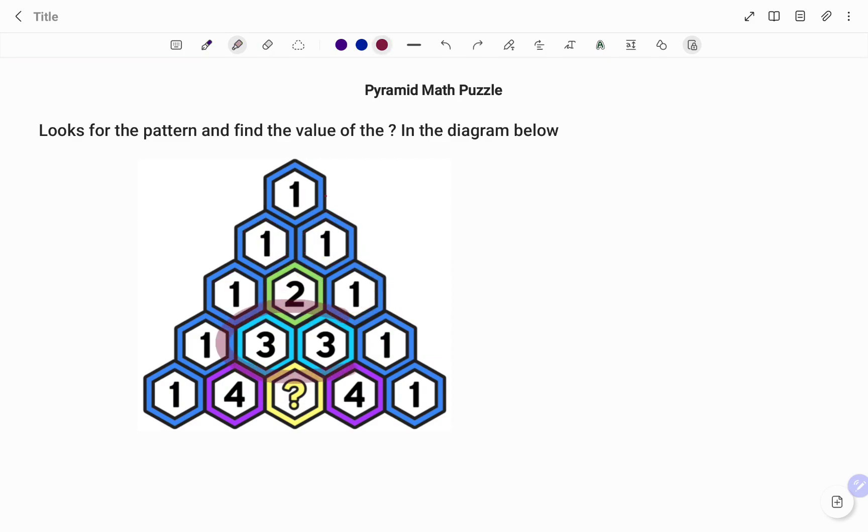Therefore, to find the value of the question mark, the two boxes directly above are 3 and 3, and we know that 3 plus 3 will give us 6. So therefore the value of the question mark is 6. Thanks for watching, bye.